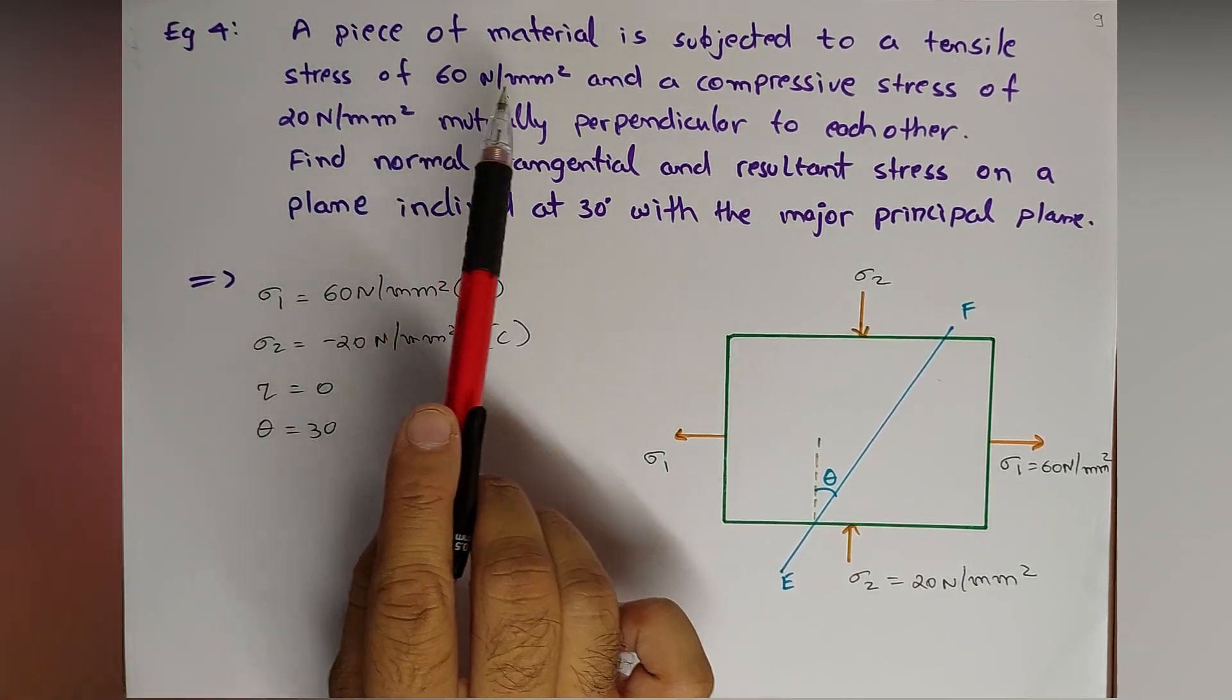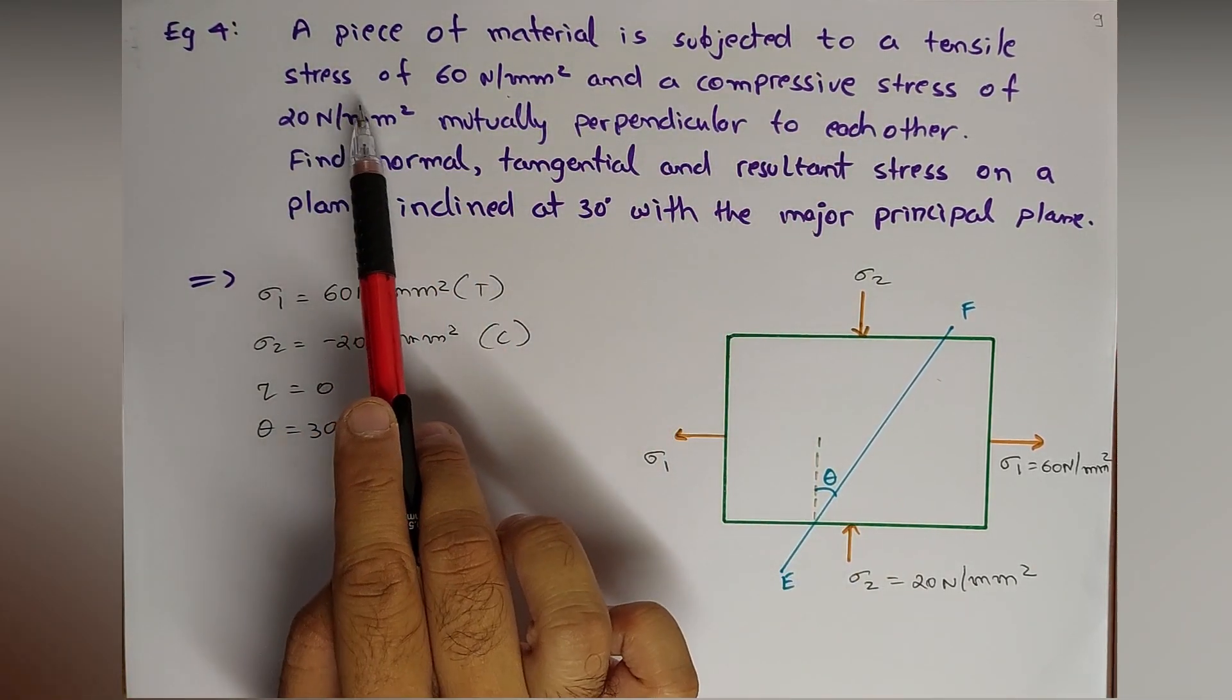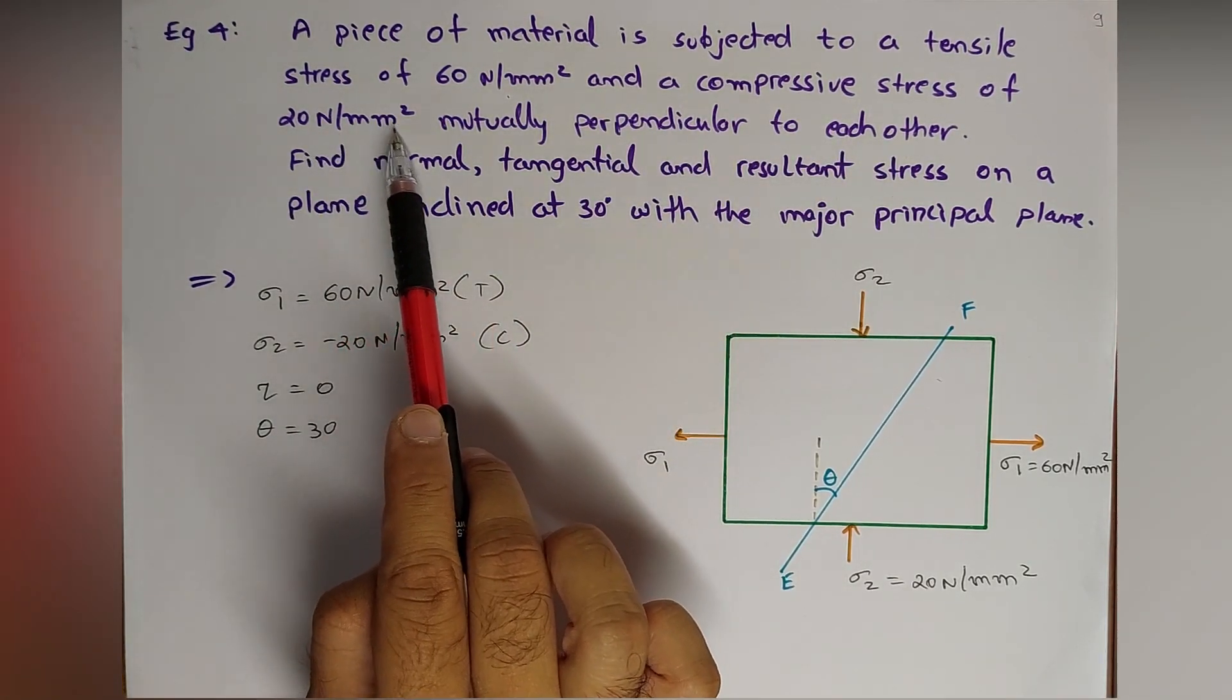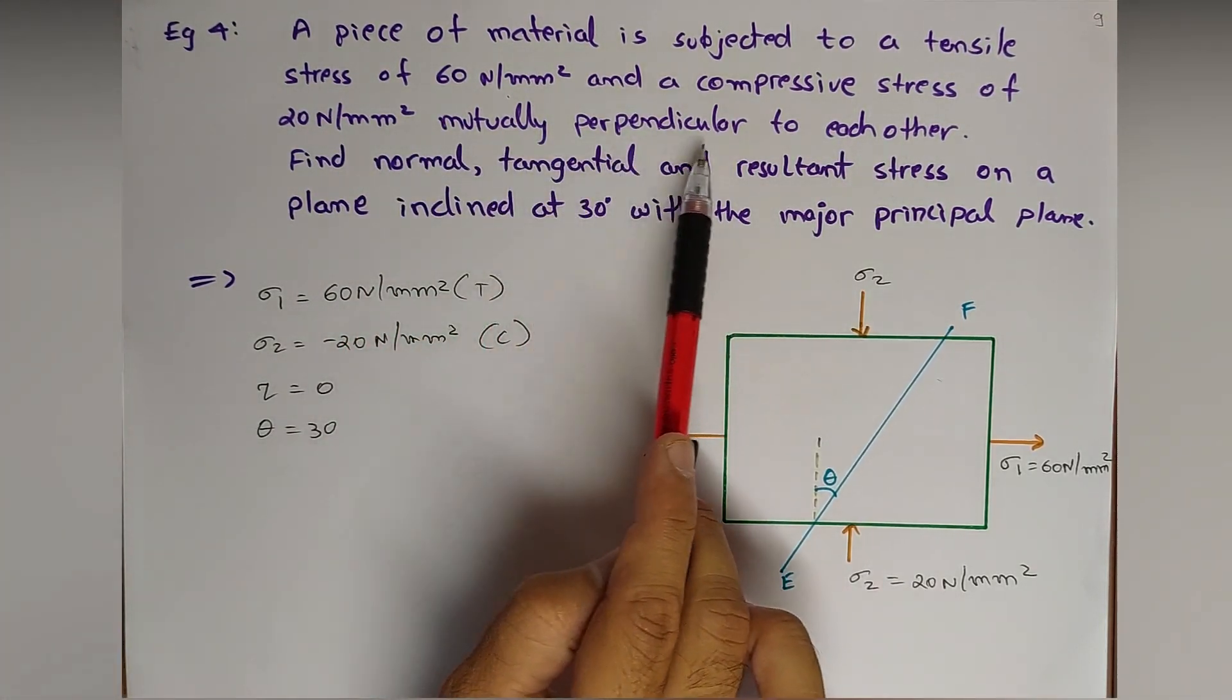We'll read the question: A piece of material is subjected to a tensile stress of 60 Newton per mm square and a compressive stress of 20 Newton per mm square, mutually perpendicular to each other.